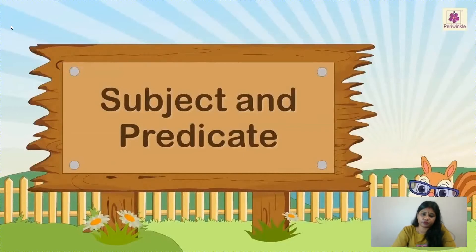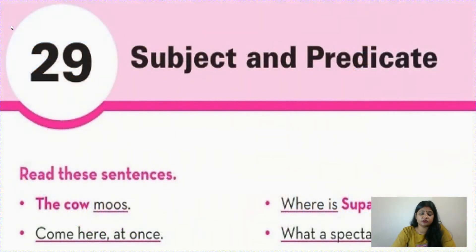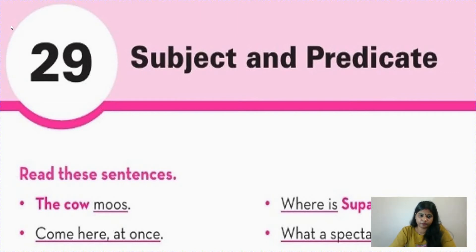As you can see on the screen, on the wooden board it's written 'subject' and 'predicate'. We are going to learn subject and predicate. A sentence is divided into two parts: the first part tells us about the person or anything — the noun — we are talking about, and the rest tells us what we are talking about that first part. Let us first read these sentences from chapter 29.